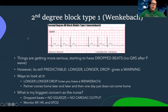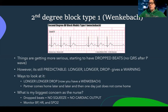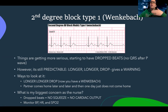There's also a second degree block, and there are two types. Things are starting to get more serious. When you're thinking of these blocks, they're always progressive. There are people that go straight into a third degree block, but a lot of times it starts as a first degree and progresses, getting worse and worse.